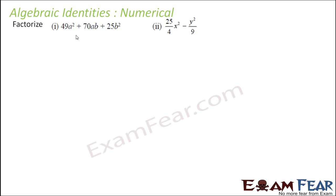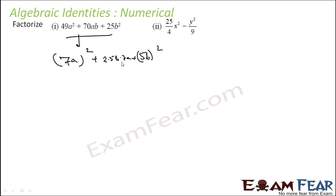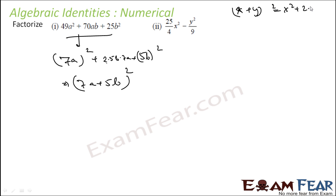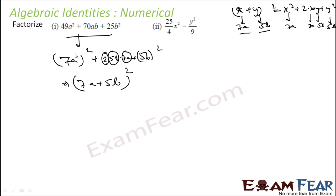Now let's factorize. We see 49a² = (7a)², 25b² = (5b)², and 70ab = 2×7a×5b. So this matches the identity (x+y)² = x² + 2xy + y², where x=7a and y=5b. Therefore, 49a² + 70ab + 25b² = (7a+5b)².